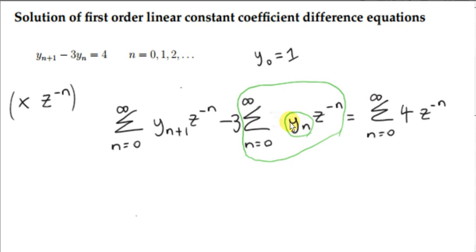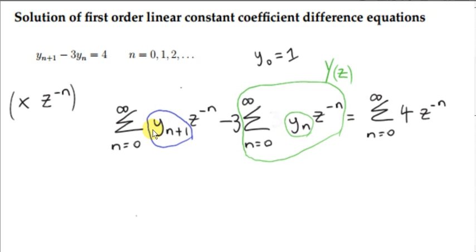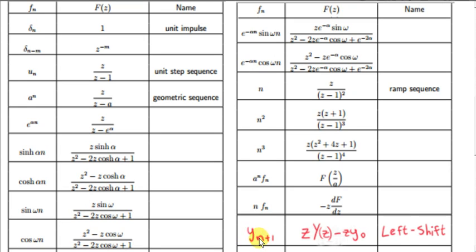Now, what about the term involving y(n+1)? We basically have the definition of the z-transform of that sequence. You can recognize that this is a shifted sequence — shifted to the left by one place, as covered in the previous video. The z-transform of a left-shifted sequence is z times big Y(z) minus z·y₀, where big Y(z) is the z-transform of little y(n).